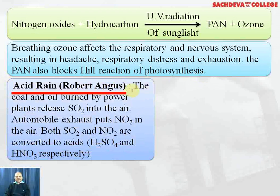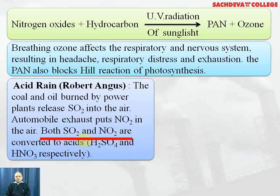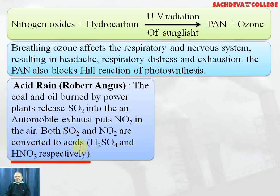Acid rain — the coal and oil burned by power plants release SO2 into the air, while automobile exhaust puts NO2 into the air. Both SO2 and NO2 are converted into nitric acid and sulfuric acid, and they are the cause of acid rain. It has been said that the presence of the Mathura Refinery is the cause of acid rain in Agra, which is adversely affecting the Taj Mahal.